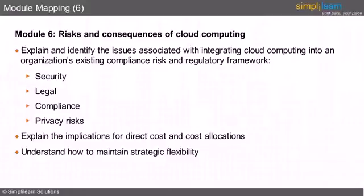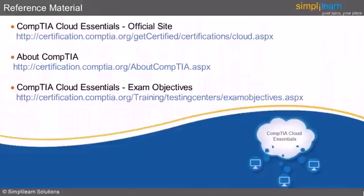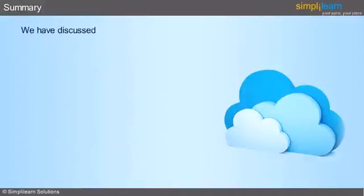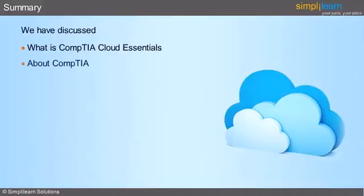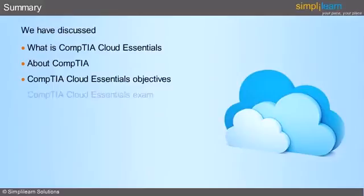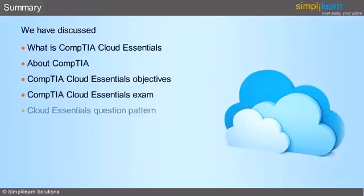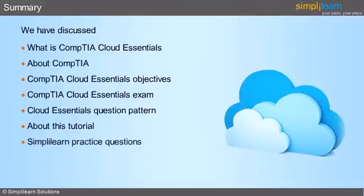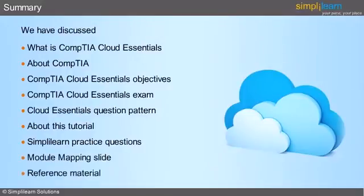Next we will look into the different reference materials available. Here is a list of materials that can be used as reference for exam preparation and for a better understanding of the subject. To summarize, we have covered what CompTIA Cloud Essentials is, about CompTIA, the objectives of this certification, the CompTIA Cloud Essentials examination, and the question pattern. We have also understood what the tutorial covers, the list of practice questions, module mapping, and other reference materials. In the next module, we will discuss the characteristics of cloud services from a business perspective.